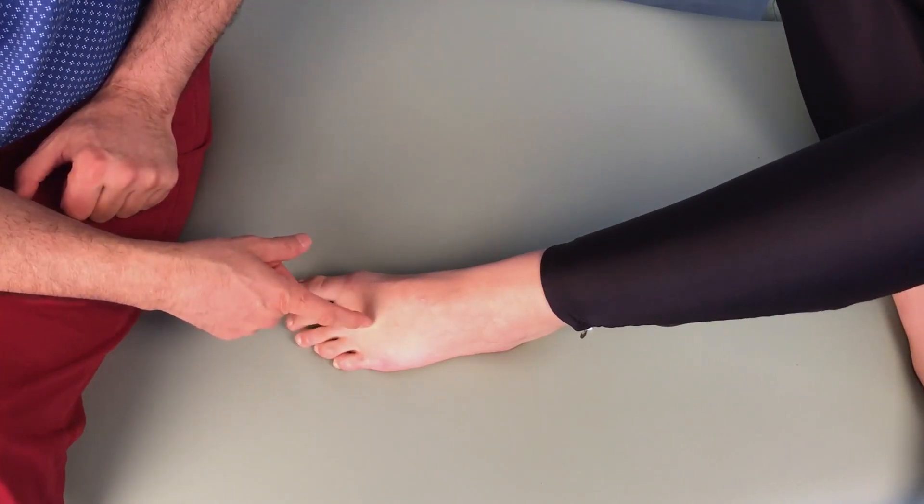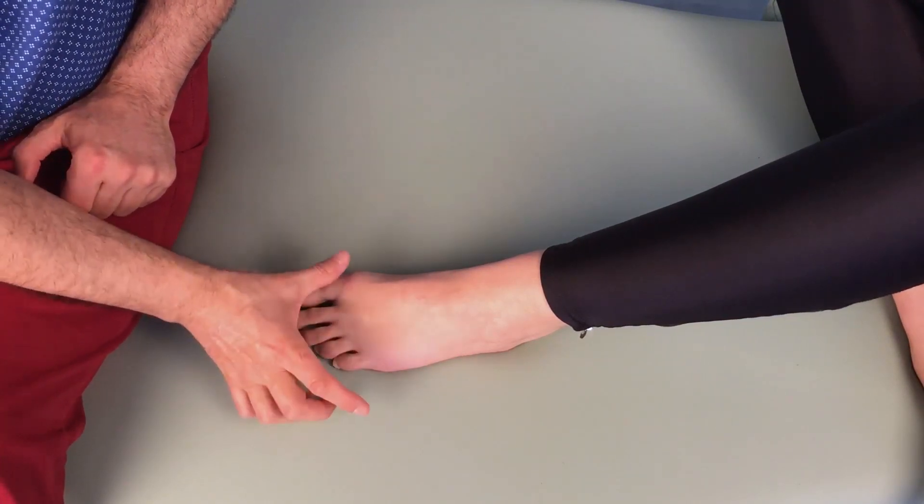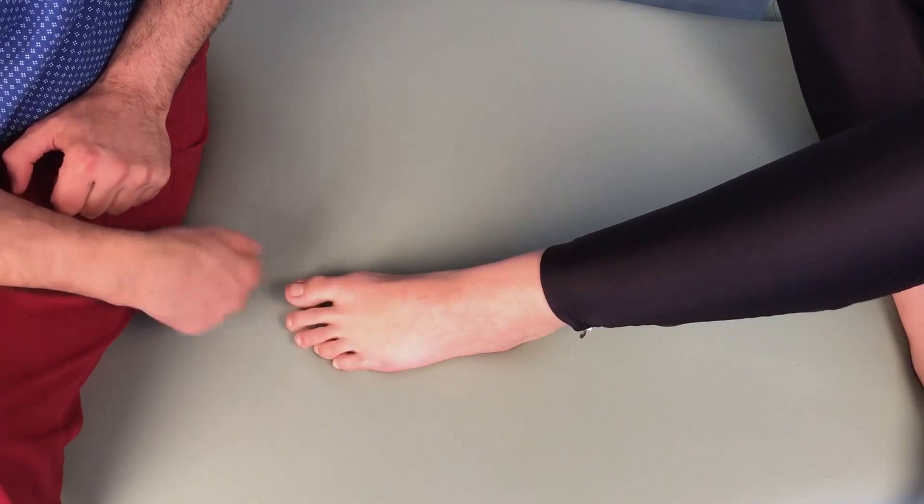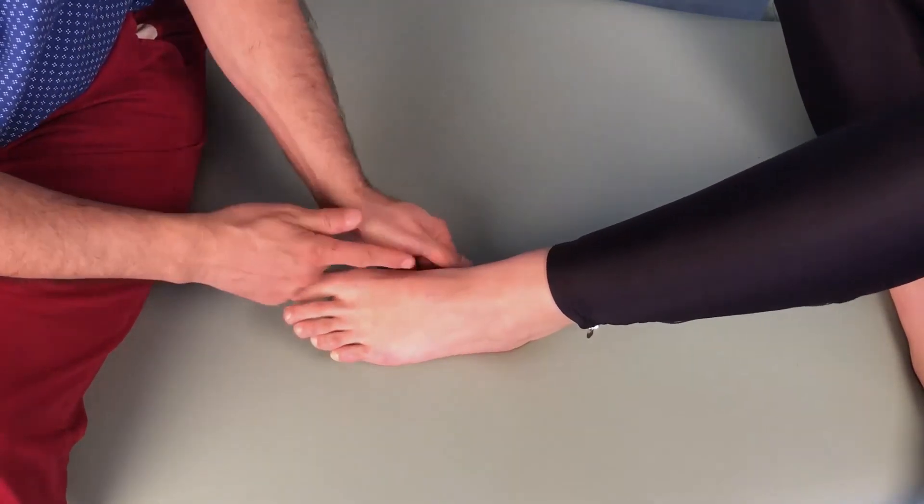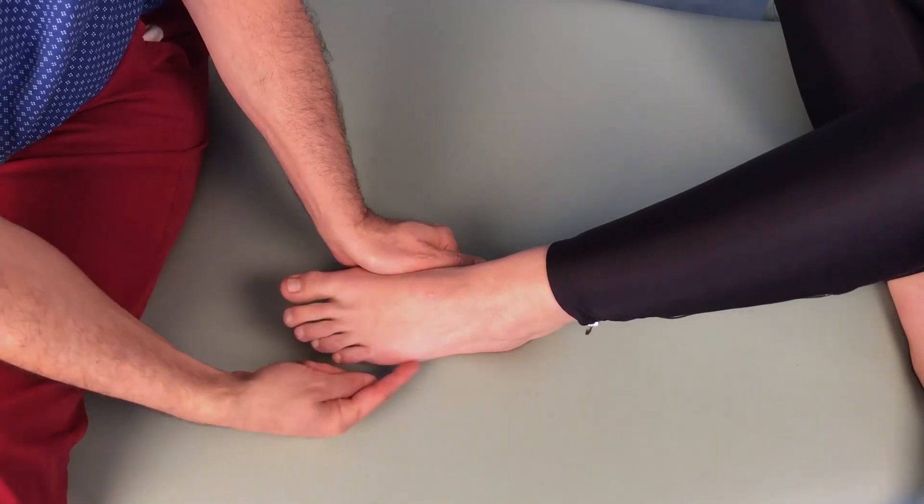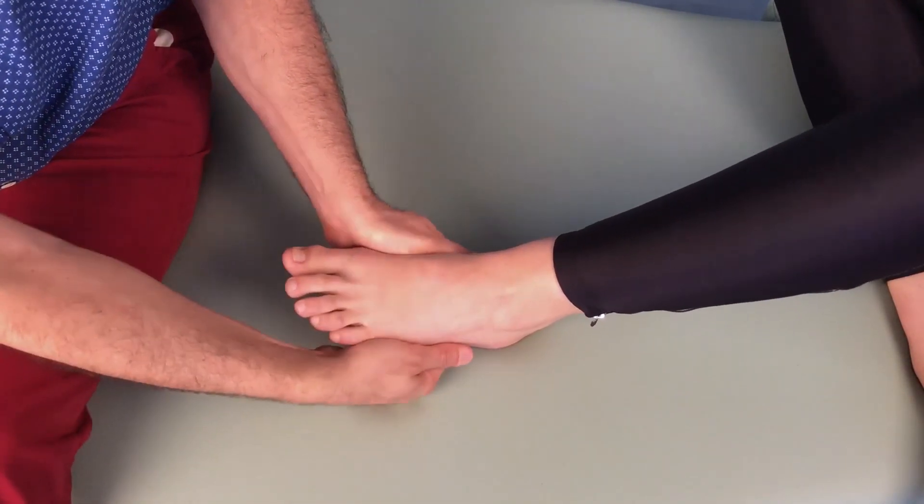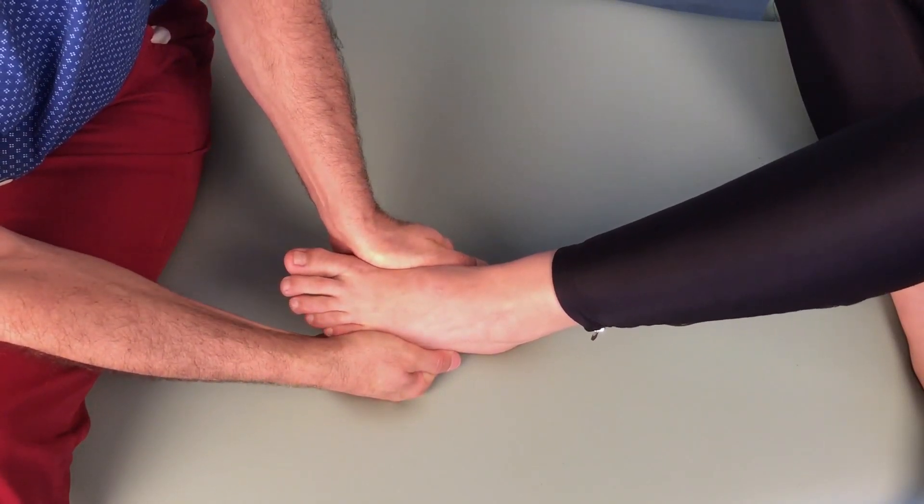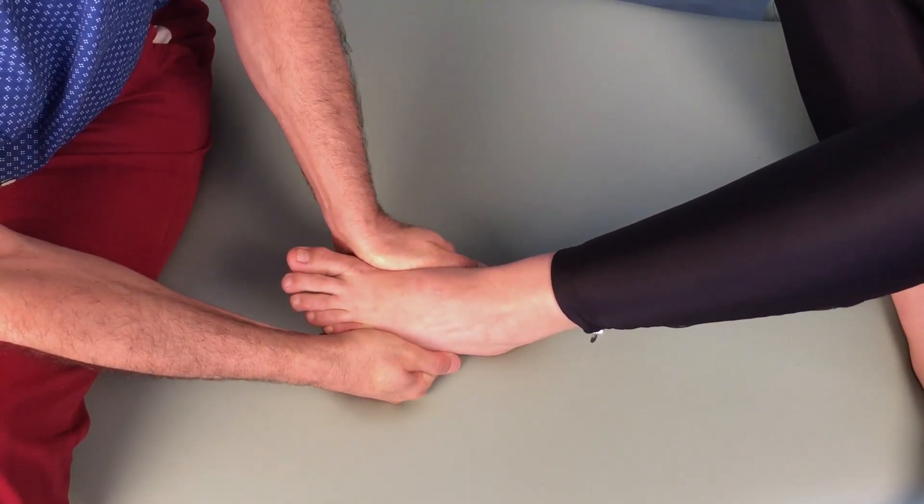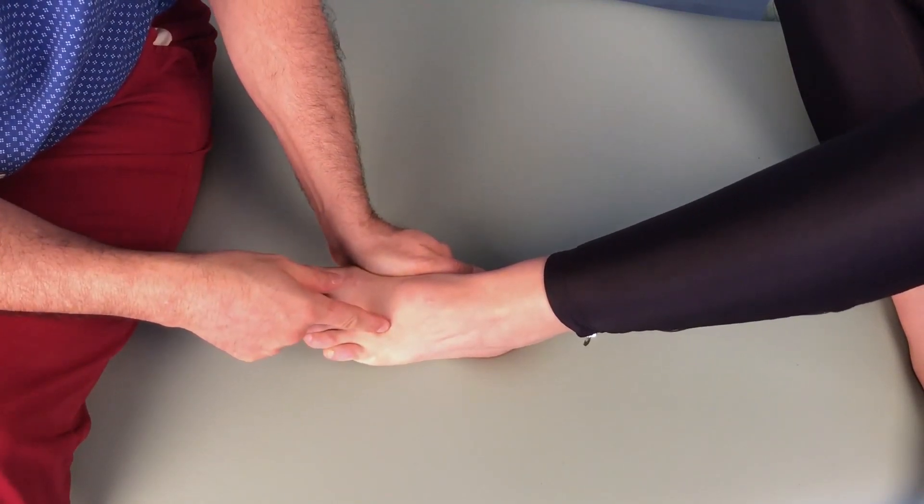So if there's a nerve that's irritated here, it makes sense that we can physically stress it by compressing the metatarsals together. I place one hand on the medial side of the first metatarsal of the big toe, and the other hand on the lateral side of the fifth metatarsal of the little toe. And I just squeeze the metatarsals together, trying to place a compression force on the neuroma between the metatarsals.